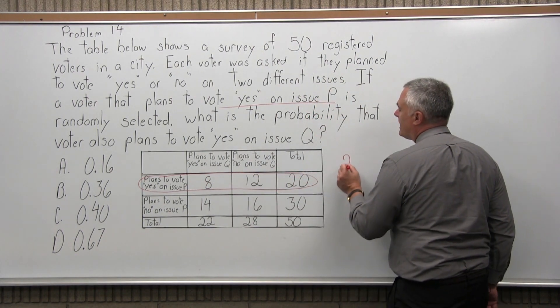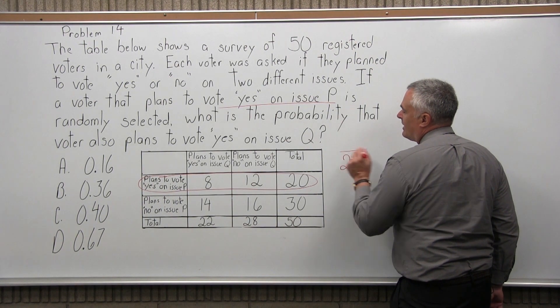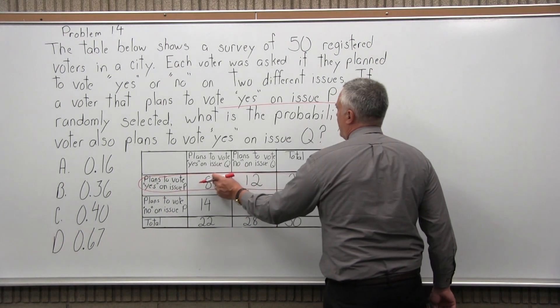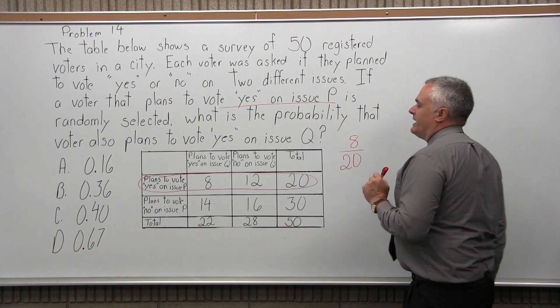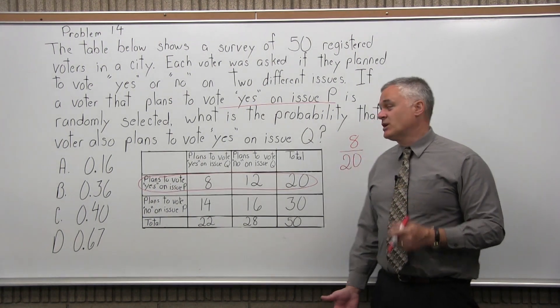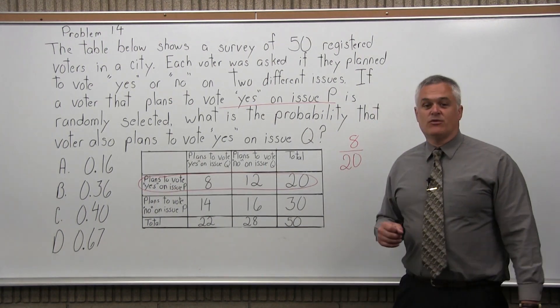So of the 20 that we selected, out of those 20, 8 say they will also vote yes on issue Q. So the probability is 8 over 20.